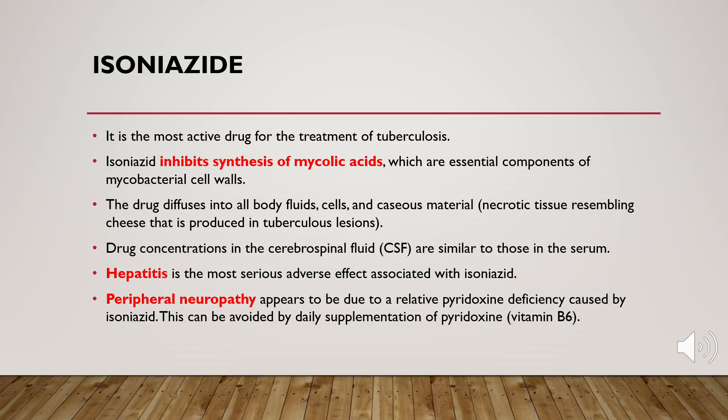Isoniazid can access and diffuse into this caseous material. It can also cross the meninges, and concentrations of isoniazid in the CSF are similar to those in the serum. Therefore, isoniazid is a good drug of choice for the treatment of TB meningitis.